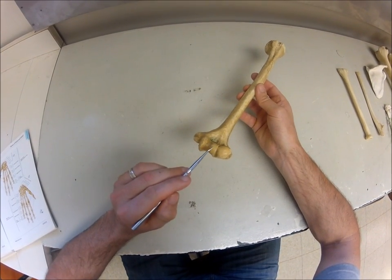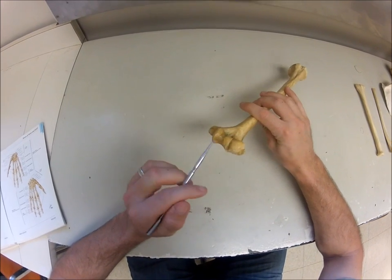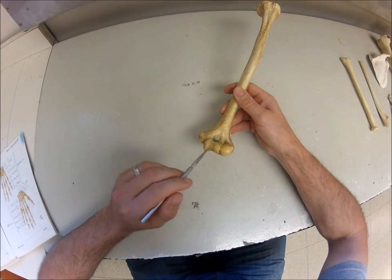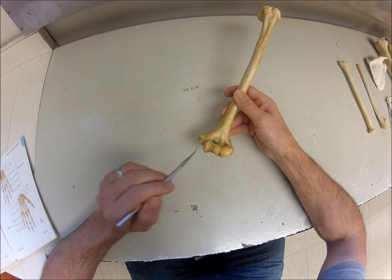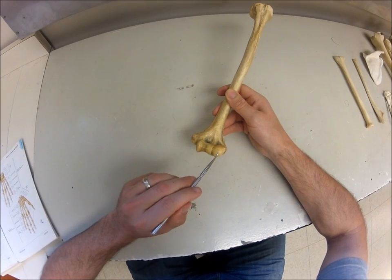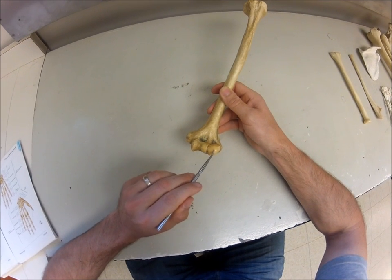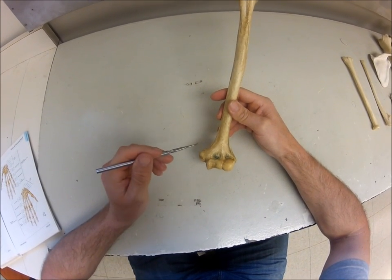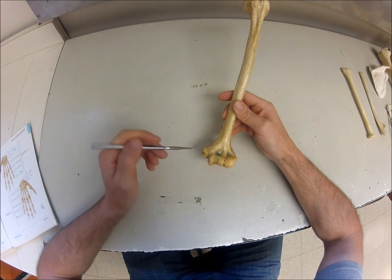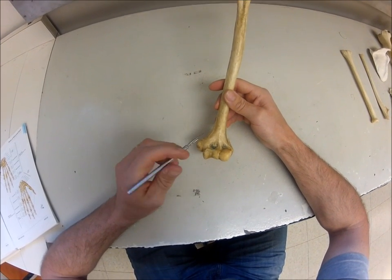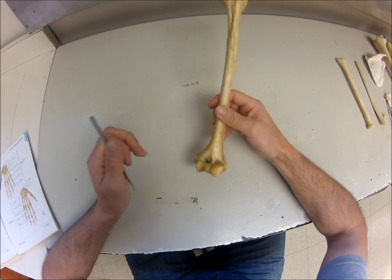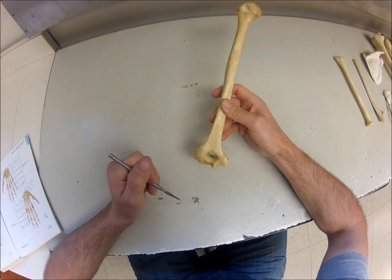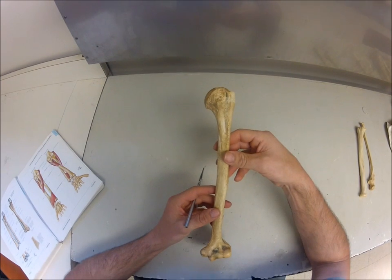Moving down further at the distal end, we have two condylar surfaces with two different names. This one is called the trochlea — that's the area where the ulna is going to articulate. This part of the condyle is called the capitulum — that's where the proximal end of the radius articulates. We also have fosses corresponding to processes on the ulna: on the anterior side is the coronoid fossa, and on the posterior side is the olecranon fossa.